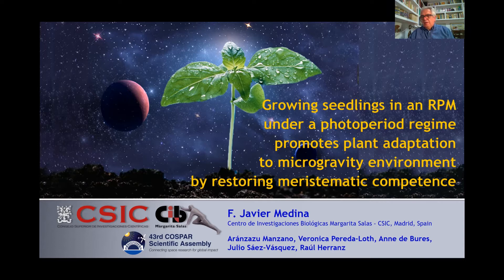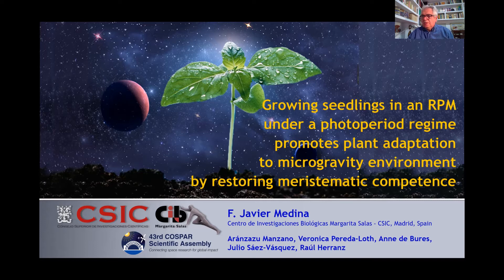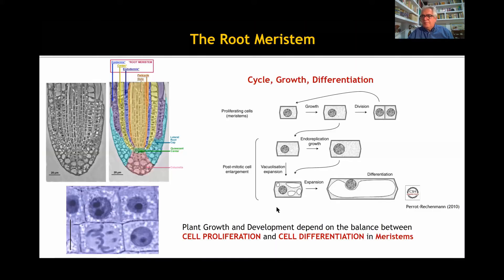Plants live in dynamic environments with frequent changes in many parameters such as temperature, humidity, water and light. Since plants are sessile organisms, they have developed different directional responses to modulate their growth according to environmental cues, which are termed tropisms. The two major tropistic cues are gravity and light. Plant development, driven by tropistic cues, is supported by the activity of the meristematic tissues.